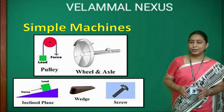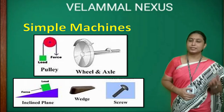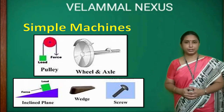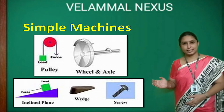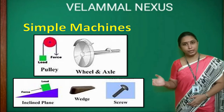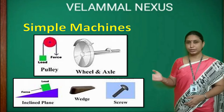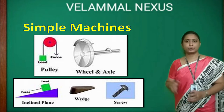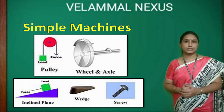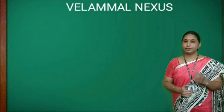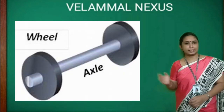Today we are going to learn about the remaining types of simple machines: wheel and axle, pulley, inclined plane, wedge, and screw. Let us see each one in detail. First we will start with the wheel and axle.